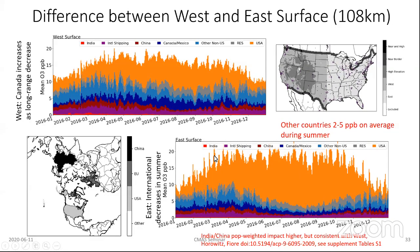One thing we did to evaluate the model was compare the population-weighted impact for emission sensitivities from our modeling system to other modeling systems, including one published in 2009. We found pretty good agreement in the relative magnitude of the sensitivity to India and China, even though the absolute magnitudes of their contributions were different. This tells us that absolute magnitudes may differ due to differences in transport pathway efficiency based on the modeling year, but their relative contributions are more equally sensitive to those transport patterns.